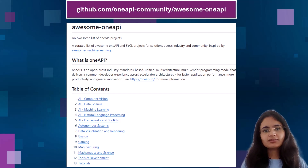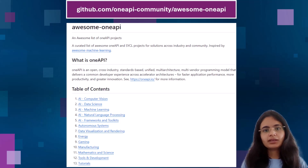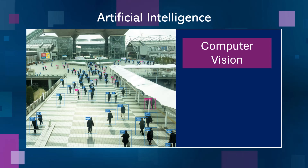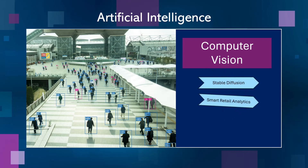In this video, you will learn about the variety of real-world application solutions that the Awesome OneAPI repo covers to bring your innovative project ideas to life. The repo has over 84 AI projects falling into different subcategories. For instance, the computer vision category involves projects for applications like stable diffusion, smart retail analytics, and optical character recognition, or OCR.